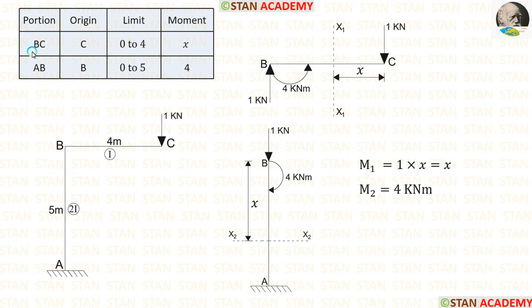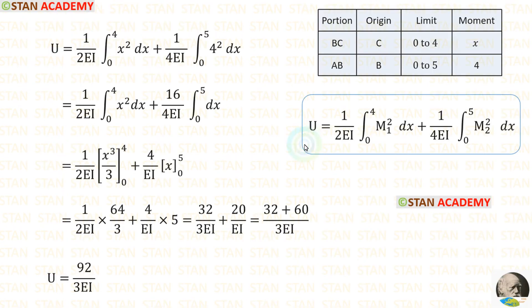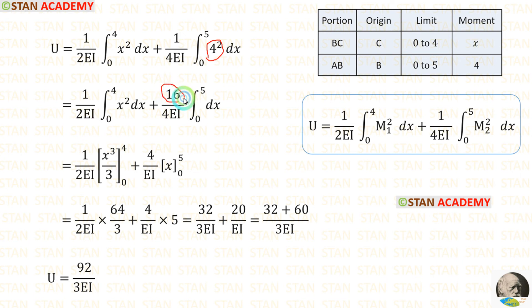We have calculated the moment values for BC and AB. For BC, the origin will be C with limits 0 to 4. For AB, the origin will be B with limits 0 to 5. In the strain energy formula, we apply the values of M1 and M2. We can take 4² outside because it is constant; 4² equals 16. Then we proceed to integration.